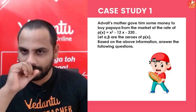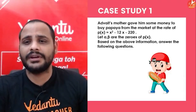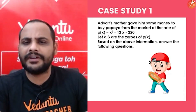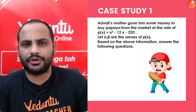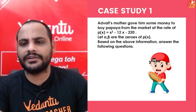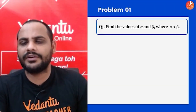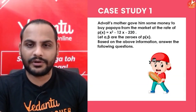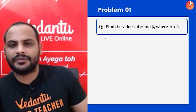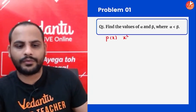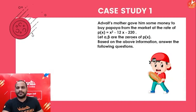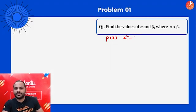Case Study 1: A mother gave her son some money to buy papaya from the market at a certain rate. Let alpha and beta be the zeros of the polynomial p(x). Based on the above information, answer the following questions. First, find the values of alpha and beta where alpha is less than beta. The polynomial p(x) is given as x² - 12x - 220.